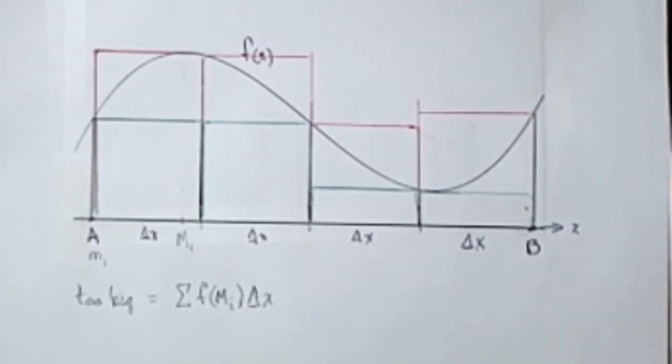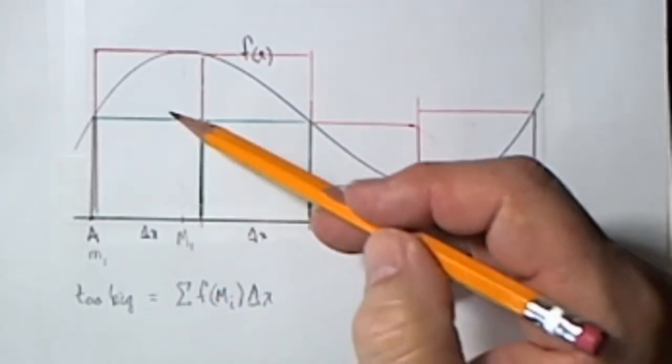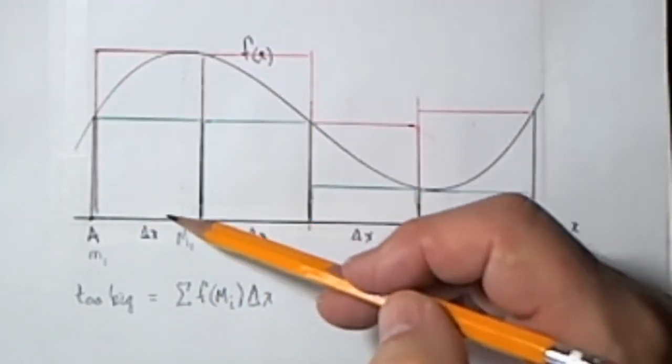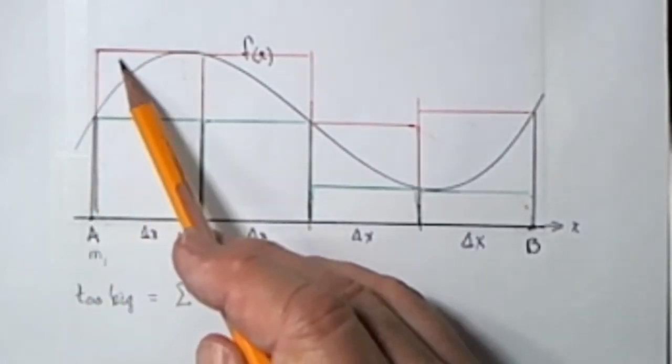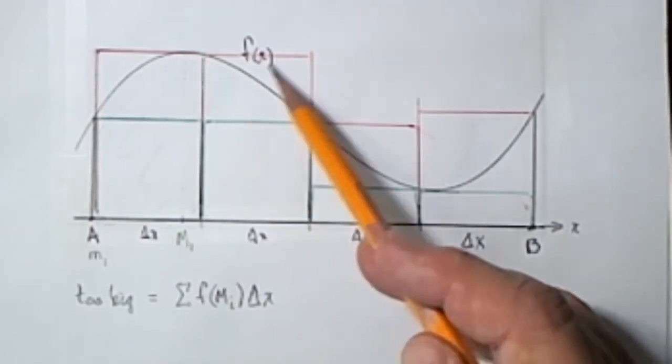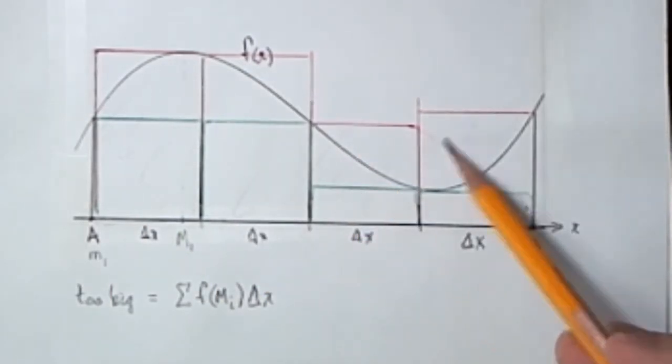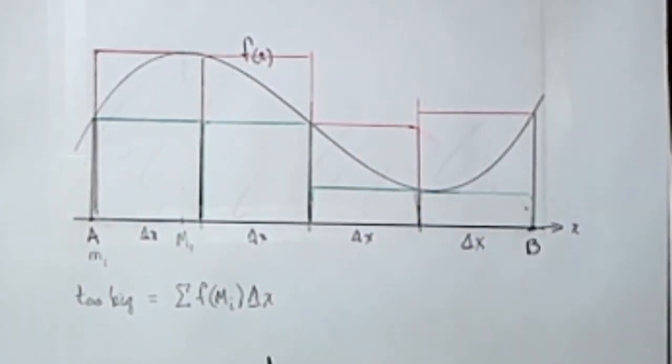Now we could find a too-big estimate by adding up the height of each of the maximum rectangles times that dx. So it would be that red area, that red area, that red area, and that red area in this first case. And that's guaranteed to be too-big.